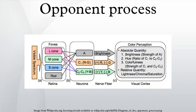The opponent color theory can be applied to computer vision and implemented as the Gaussian color model and the natural vision processing model.